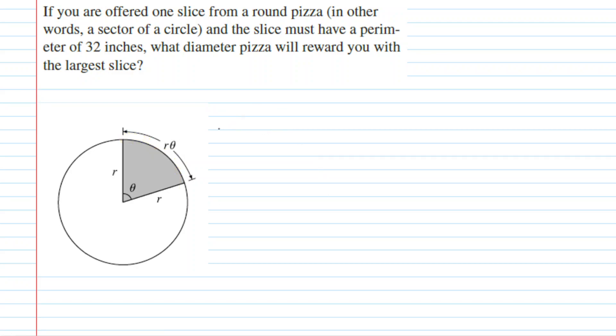The next thing we need to do after drawing a good labeled diagram is to come up with what I like to call our constraint equation. The constraint equation is typically based on the number that is given in the problem. In this case, we know that the perimeter of this slice of pizza is 32 inches.